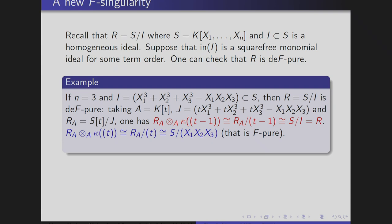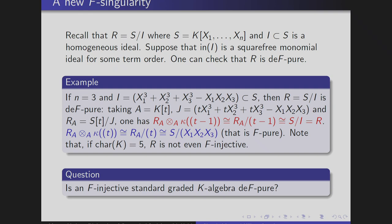In particular, notice that in characteristic p these rings may not even be F-injective. So there are also some non-F-injective rings which may be death-pure. One open question — I don't expect the answer to be positive, but I also don't know any obstructions — is: can you find an example of an F-injective standard graded algebra which is not death-pure?